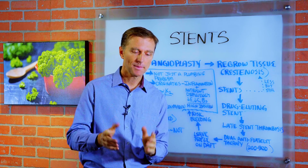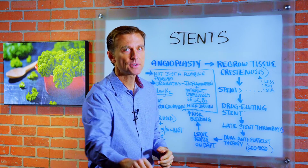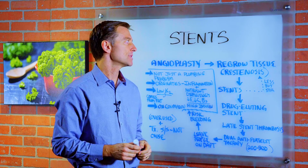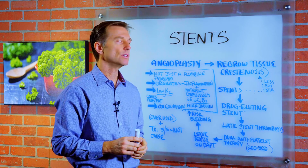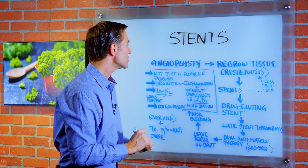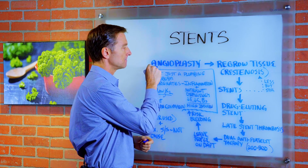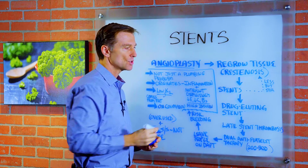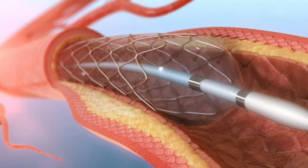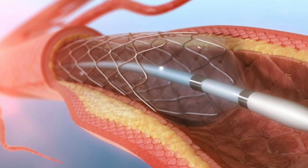Today we're going to talk about stents and some of the cascade effect problems that occur when you get a stent. Originally they used angioplasty, which is a procedure where they put a balloon to mash the plaque and create more space in your arteries.